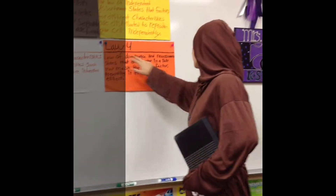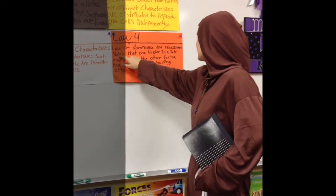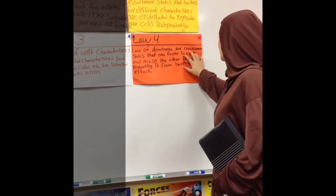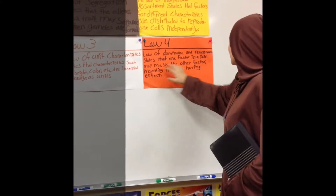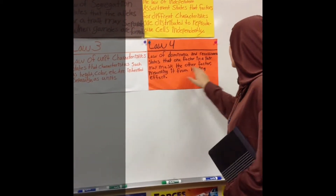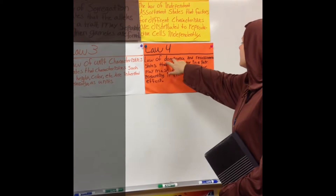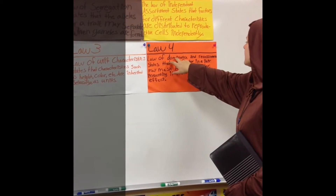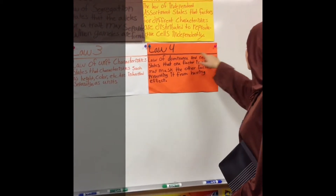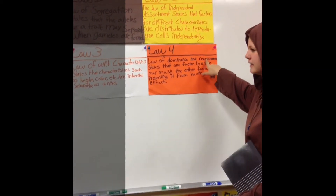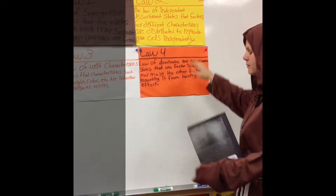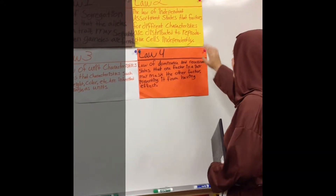The law of dominance and recessive states that one factor in a pair may mask the other factor, preventing it from having effect. Dominant — dominant is always number one. Recessive — it disappears. Nobody knows where it goes, it just disappears.